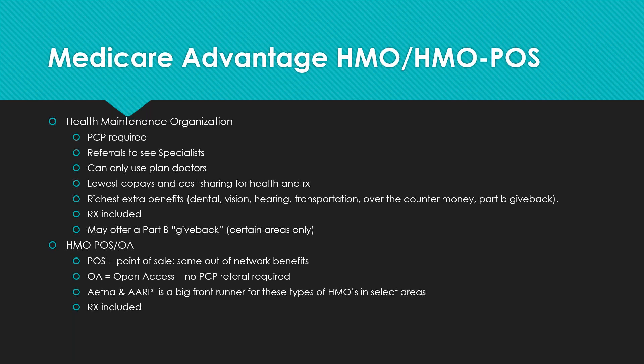There are two subtypes of HMO: the HMO POS (Point of Sale) and the OA (Open Access). An HMO POS requires you to use plan doctors for services in the summary of benefits but offers some out-of-network benefits for specialties the HMO can't contract locally. Open Access HMOs allow you to see specialists without a PCP referral, but you must stay in the network. Prescription drug coverage is typically included in both.